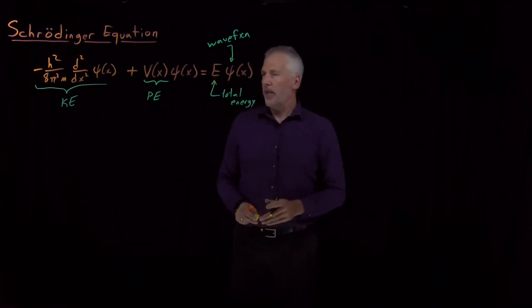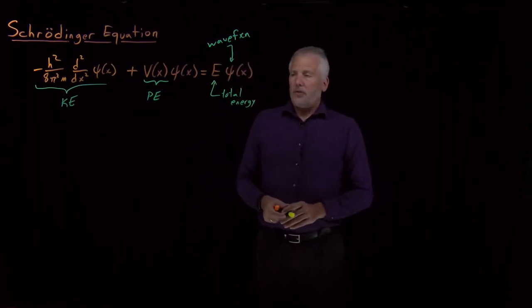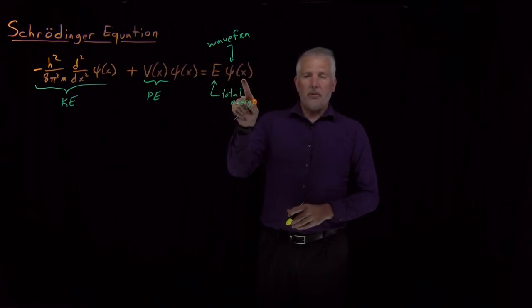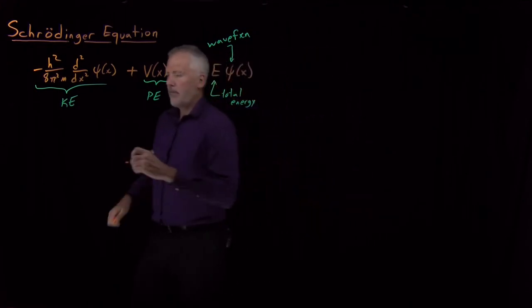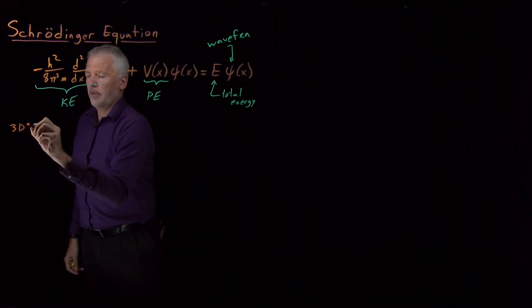Let's see what else we have to point out. This equation, the way I've written it down, is for a one-dimensional wave function, a wave function that depends only on the position x. For a three-dimensional particle that can move around in x, y, and z, the function has a slightly different form.